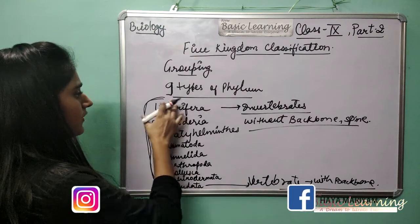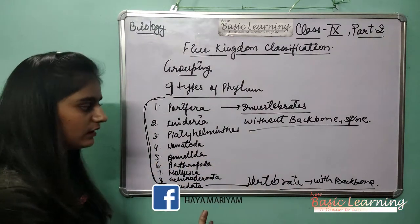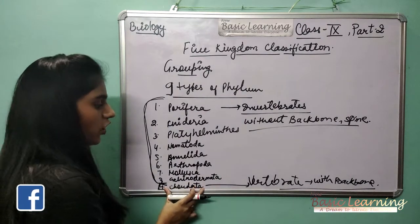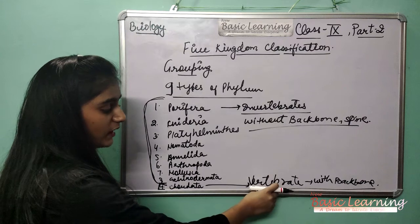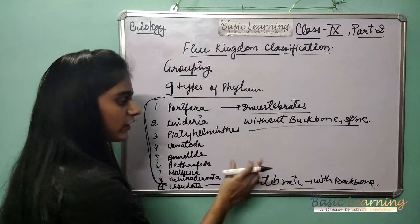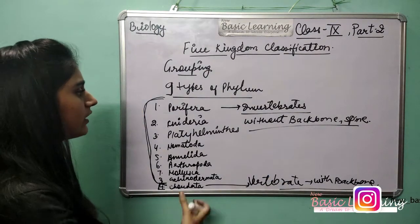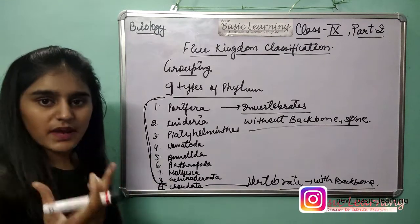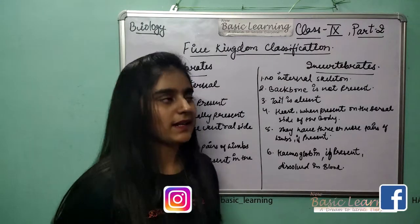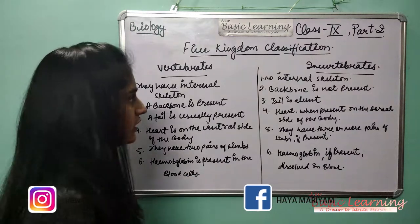So first eight are invertebrates which do not have a backbone or spine, and the last one is Chordata which are vertebrates — meaning we humans and mammals, including us, are vertebrates with backbone. Now we will understand the major differences between vertebrates and invertebrates.